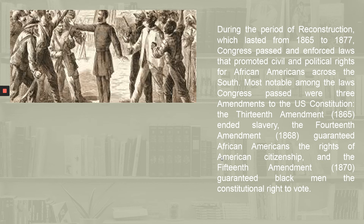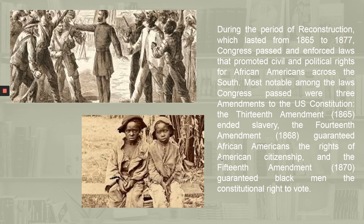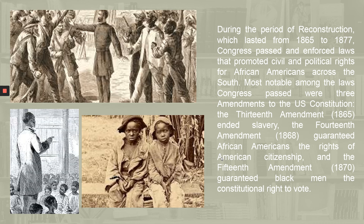Most notable among the laws Congress passed were three amendments to the U.S. Constitution. The Thirteenth Amendment in 1865 ended slavery. The Fourteenth Amendment in 1868 granted African Americans the rights of American citizenship. And the Fifteenth Amendment in 1870 granted Black men the constitutional right to vote.